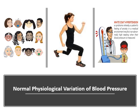Temperature is another important normal physiological variation. In hot weather, arterial blood pressure is elevated mainly in systolic pressure due to increased heart rate, with a drop in diastolic pressure due to vasodilation. Exposure to cold produces increases in both systolic and diastolic blood pressure due to vasoconstriction.